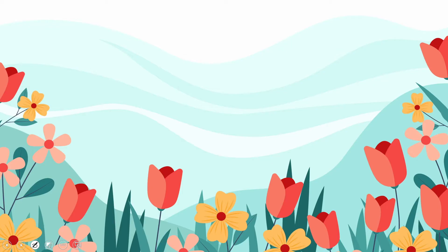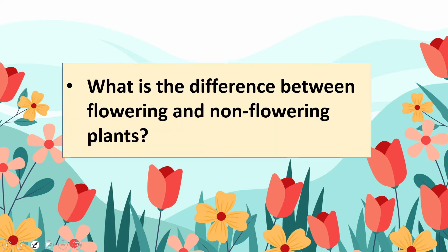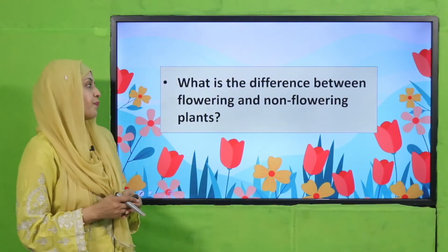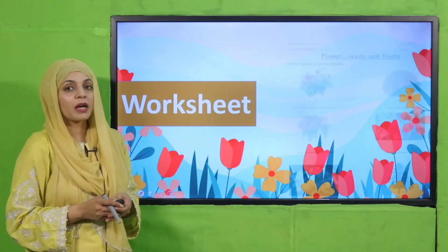Now is the time for evaluation. Quickly answer this question: what is the difference between flowering and non-flowering plants? Flowering plants have flowers on them and they produce seeds. Non-flowering plants do not produce flowers and they reproduce through spores.